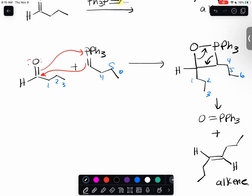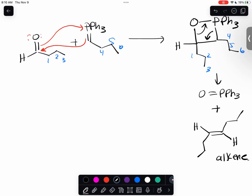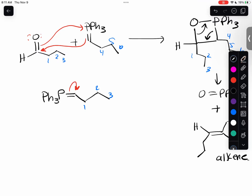The trans product is favored - it's more stable because the substituents are on opposite sides rather than facing each other like the cis product. Trans products are always the favored products. If you look at the resonance structure of my ylid, what you'll notice is that the phosphorus has the positive charge and the carbon has the negative charge - it's just a resonance structure.